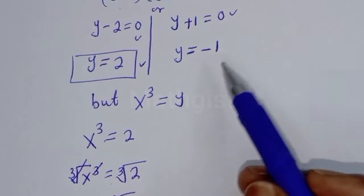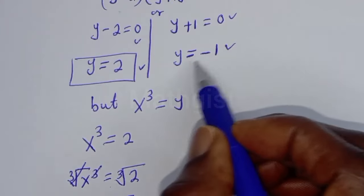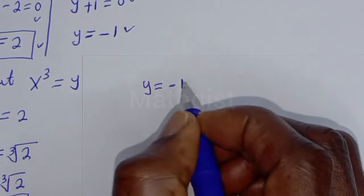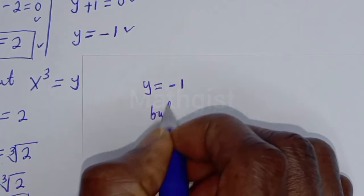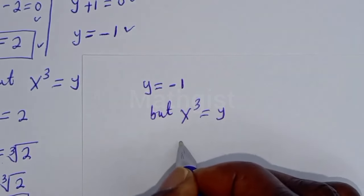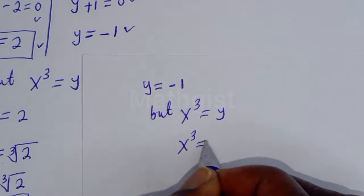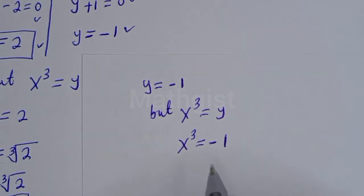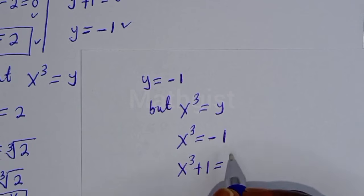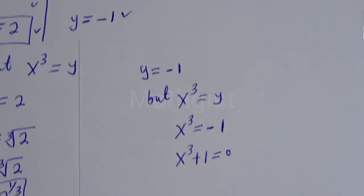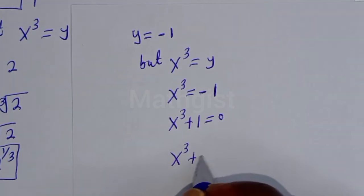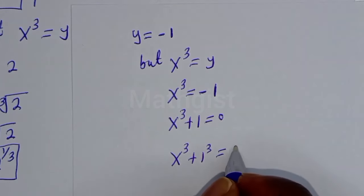From the second case, when y equals minus 1, and since s^3 equals y, we get s^3 equals minus 1. Then s^3 plus 1 equals 0, which is the same as s^3 plus 1^3 equals 0.